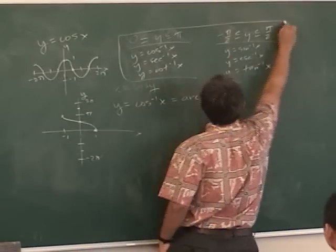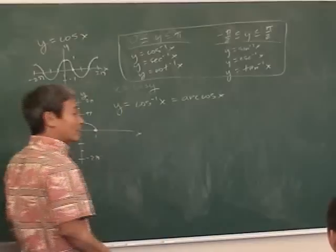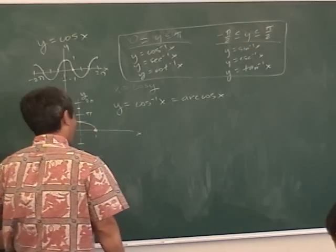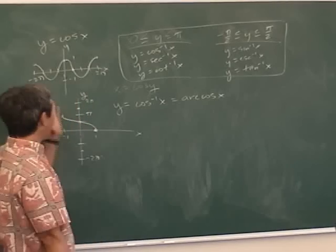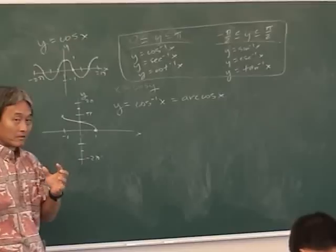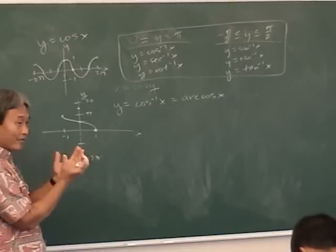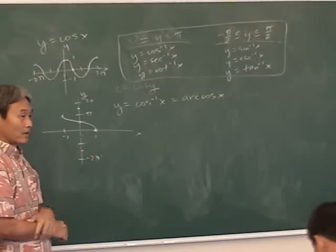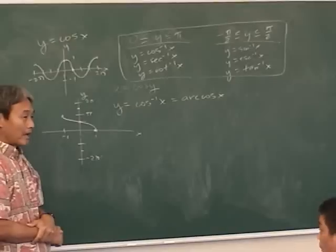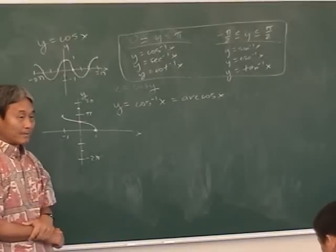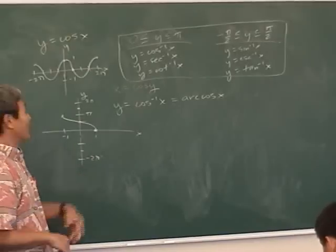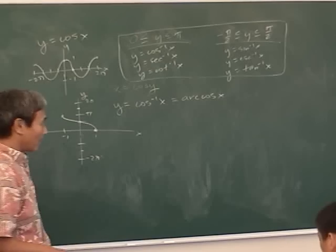This is the key to the whole chapter. If you don't know this, you're doomed. This is how you actually graph the inverse trig functions. These graphs have to be at the tip of your fingers — just like y equals x squared, y equals x cubed, y equals e to the x, y equals natural log x. All six trig functions should be automatic, and now the six inverse trig functions should be as well.